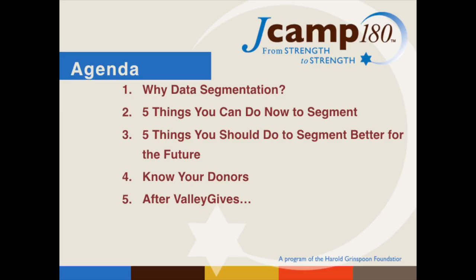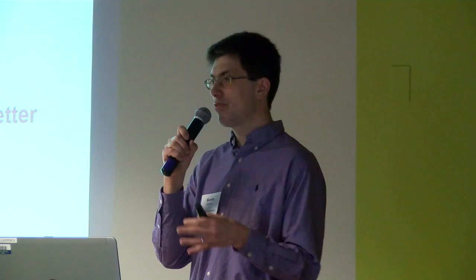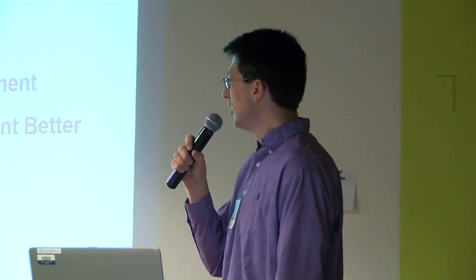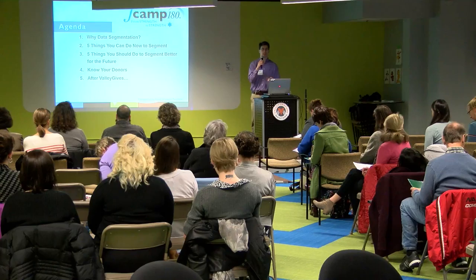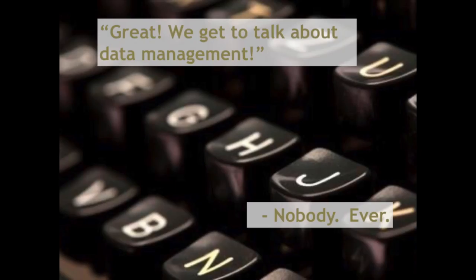So what are we going to talk about? We're going to talk about what data segmentation is and why we care about it. We'll cover five things you can do now to segment — things you can do for this year's Valley Gives, within the next month, to help with your communications and outreach. Then we'll talk about five longer-term things for next year's Valley Gives and your other development work, the tenant of Know Your Donors, and what you should do after Valley Gives to be successful this year and in the future.